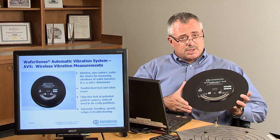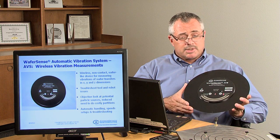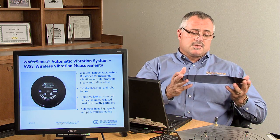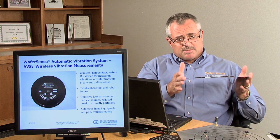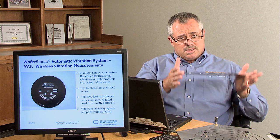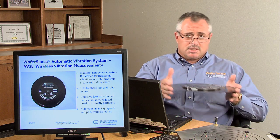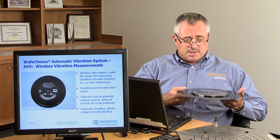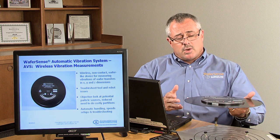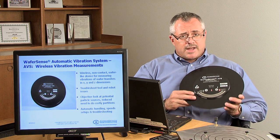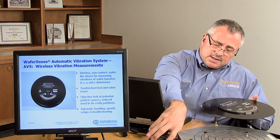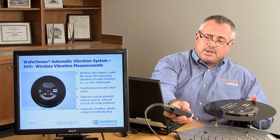WaferSense products come in 200 and 300 mm sizes. WaferSense devices are meant to be handled like ordinary wafers using automation. They can be placed in FOUPs, handled by end effectors. They are meant to go into process chambers and are vacuum compatible.